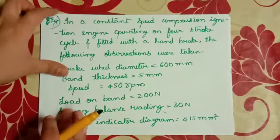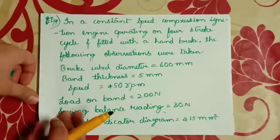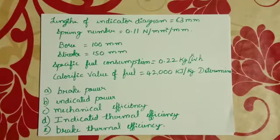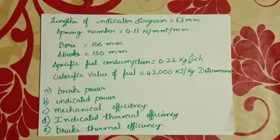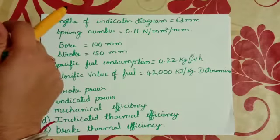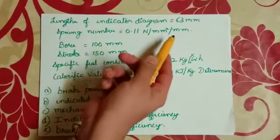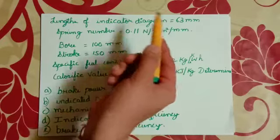Area of indicator diagram 415 mm square, length of indicator diagram 63 mm, spring number 0.11 newton per mm square per mm.